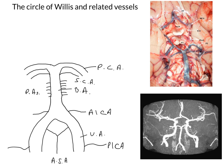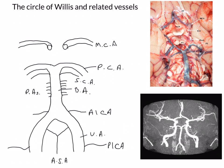Next, let's draw the elements of the anterior circulation. We start with our internal carotids, which ascend through the carotid canal and form a number of branches. There's one internal carotid and another there. The major continuation of the internal carotids are the middle cerebral arteries. Another vital branch coming off the internal carotids are the anterior cerebral arteries.